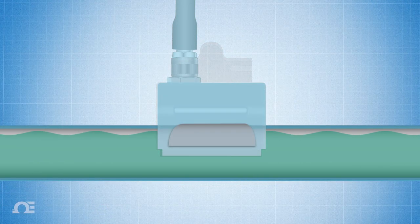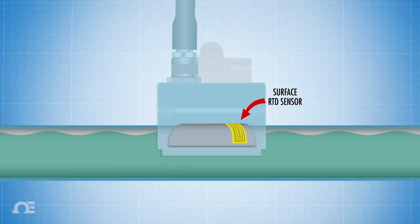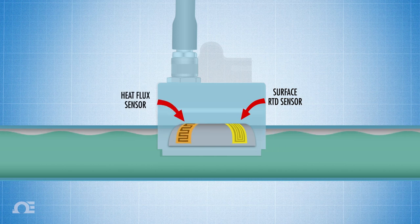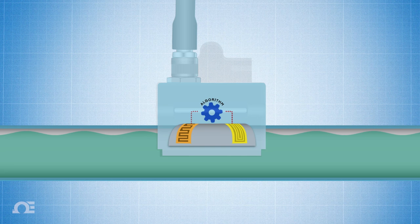The HANI sensor uses a carefully coupled surface RTD sensor in conjunction with a thin-film heat flux sensor and runs both data sets through a proprietary algorithm to calculate the temperature of the fluid inside the pipe or tank.